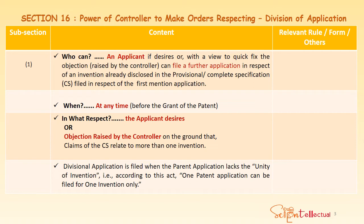Now let's discuss Section 16, a very important section under Indian Patents Act. It covers the Power of Controller to make orders respecting division of application. Subsection 1: Who can apply for a divisional application? An applicant, if he desires or with a view to fix an objection raised by the controller — either the applicant voluntarily wants to file a division, or the controller has raised an objection — may file a divisional application, also known as a further application, in respect of the invention already disclosed in the specification, provisional or complete.